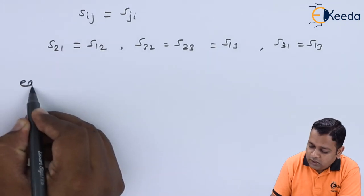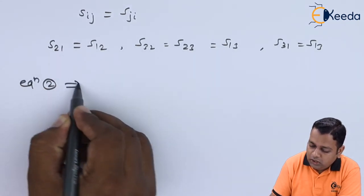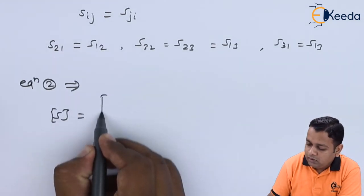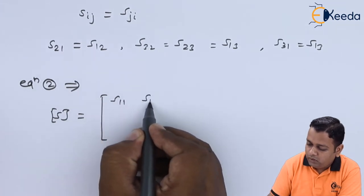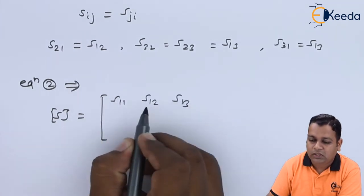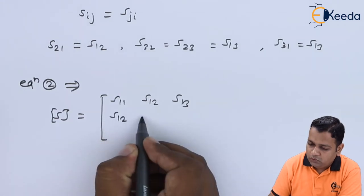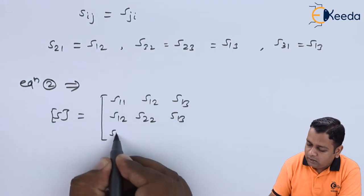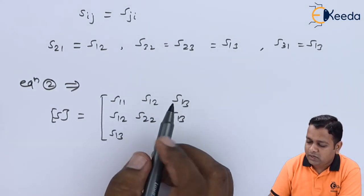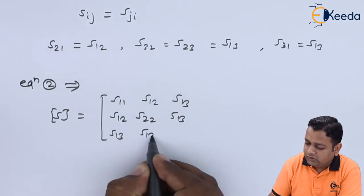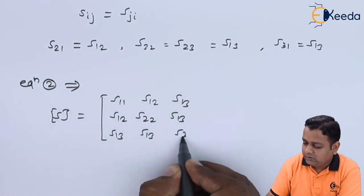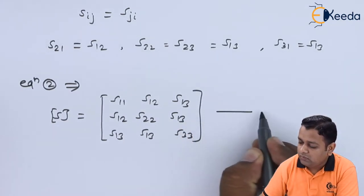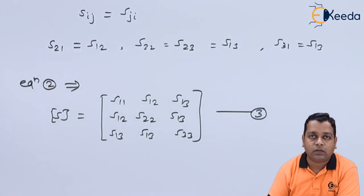Using these substitutions, equation number 2 implies that the scattering matrix S equals: first row S11, S12, S13; second row S12, S22, S13; third row S13, S13, S33. This is equation number 3.